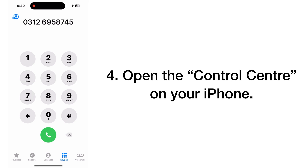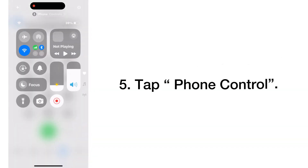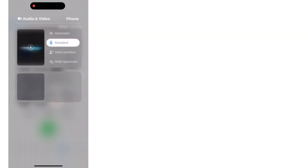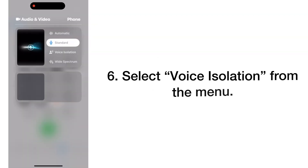Open the control center on your iPhone, tap phone control, then select voice isolation from the menu.